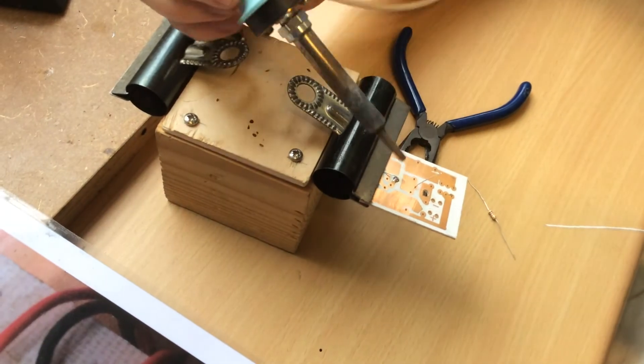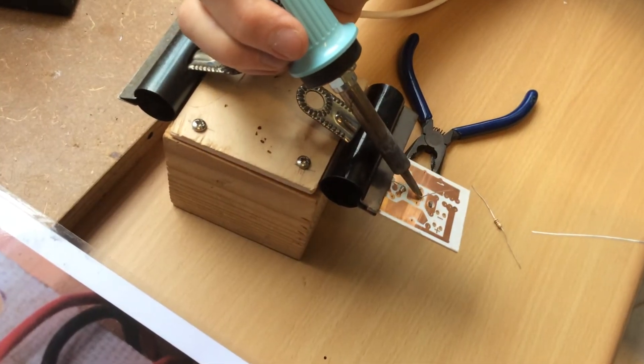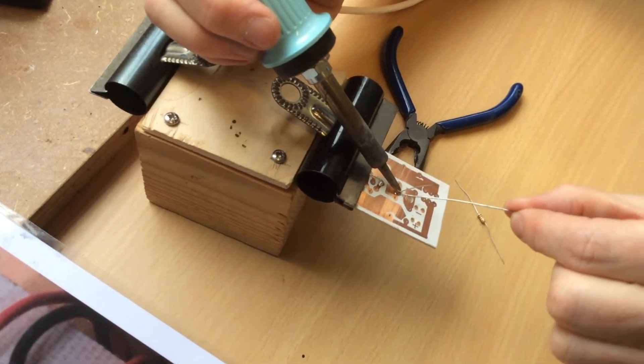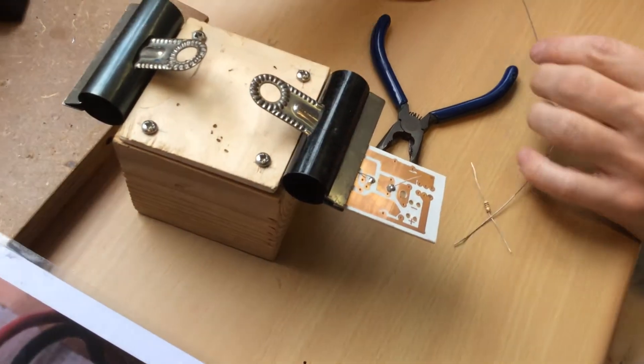So put the iron on one side. One Mississippi, two Mississippi, three Mississippi. There you go.